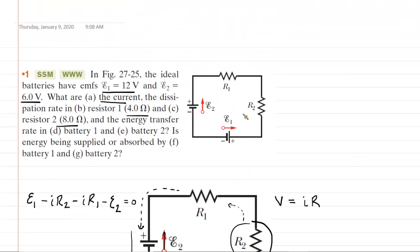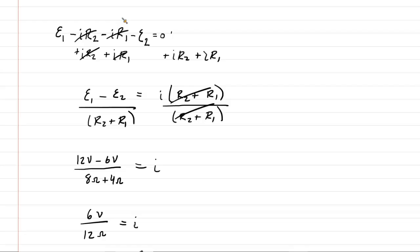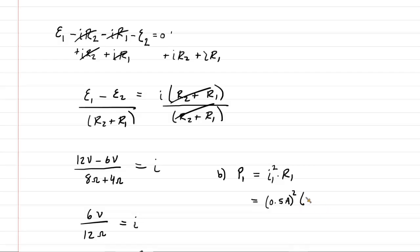In part B, they ask for the dissipation rate in resistor 1. Dissipation rate is another term for power. The power equation for a resistor is P = I² × R. Taking the current of 0.5 amps, squaring it, and multiplying by R1 which is 4 ohms, we get a power of 1 watt. That is the correct answer to part B.